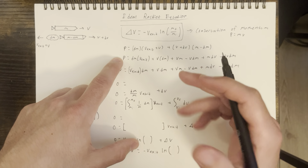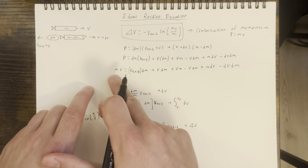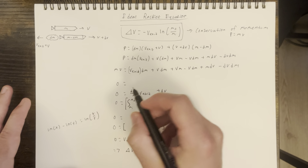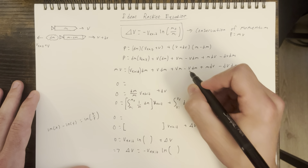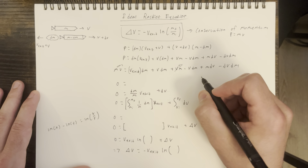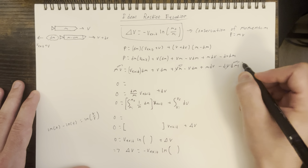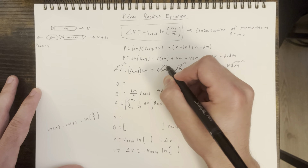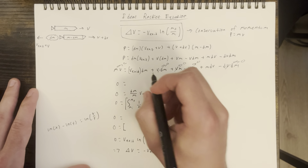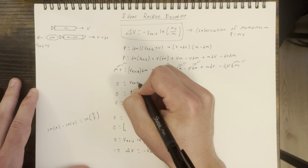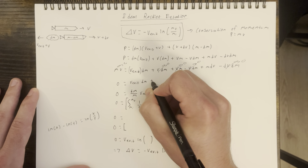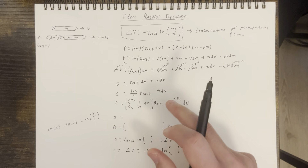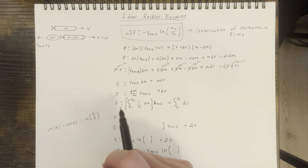Since we're using momentum, we get p equals mv, and we can substitute that in. Now we can actually cancel out a handful of terms. We have mass times velocity appearing here and here, so we can get rid of those. These two differentials are infinitely small pieces, so we can set those to zero as well. We're left with simply our exit velocity times the differential mass, plus our mass times our velocity differential.